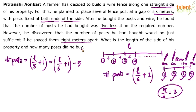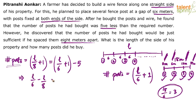Now solve this one equation to get the value of L. L by 8 plus 1 is the number of poles for 8-meter spacing; L by 6 plus 1 is the number for 6-meter spacing. Since the poles were 5 less for 6-meter spacing: L by 6 plus 1 minus 5 equals L by 8 plus 1. Simplifying: L by 6 minus L by 8 equals 5. The plus 1 terms cancel on both sides, and minus 5 moves to the other side as plus 5.